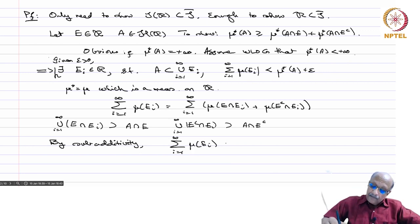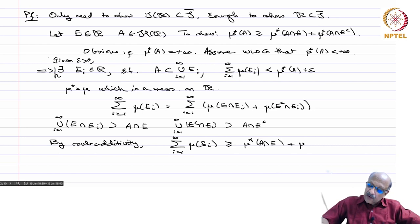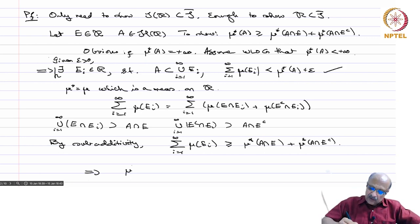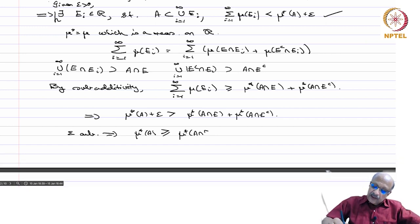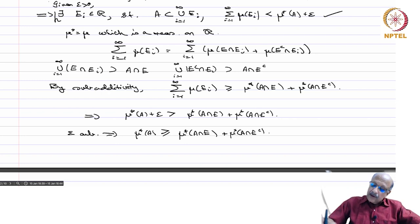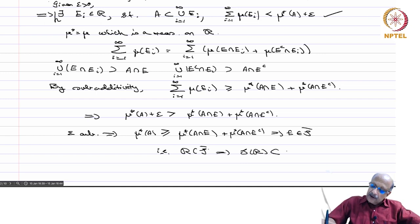By sub-additivity, sigma mu(E_i) is greater than or equal to mu*(A ∩ E) plus mu*(A ∩ E^c). Therefore, since mu*(A) + epsilon is strictly bigger than mu*(A ∩ E) plus mu*(A ∩ E^c), and epsilon is arbitrary, this implies mu*(A) is greater than or equal to mu*(A ∩ E) plus mu*(A ∩ E^c). This implies E belongs to S-bar, so R is contained in S-bar, which implies S(R) is also contained in S-bar, and the theorem is completely proved.